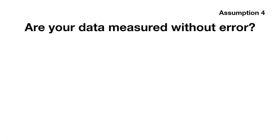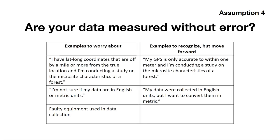Now about that last assumption: we need to make sure our data are measured without error. I've put here examples to worry about and examples to recognize but move on. Examples to worry about: you might have lat-long coordinates that are off by a mile. You might be conducting a study on microsite characteristics of a forest where you really should know the exact spot. Your data are not measured without error. You might not know if data are collected in English or metric units—that's one I've encountered. You might have faulty equipment that's not giving consistent readings. Those are examples to worry about.